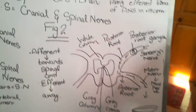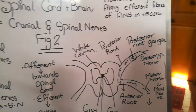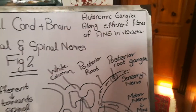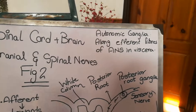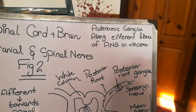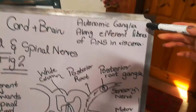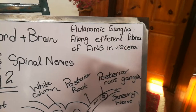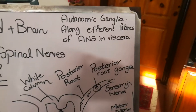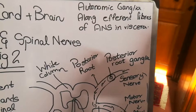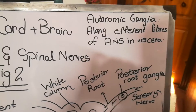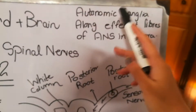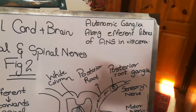The posterior root ganglion, as mentioned, is a collection of cell bodies present outside the spinal cord, which is why it is called ganglia. Ganglia are also present in cranial nerves, where they are called sensory ganglia. There are also ganglia present along autonomic nerve fibers, such as in the visceral region, where sympathetic or parasympathetic nerve fibers go to the stomach or heart for contraction or relaxation. The collection of cell bodies outside the autonomic nervous system are called autonomic ganglia, not sensory or posterior root ganglia.